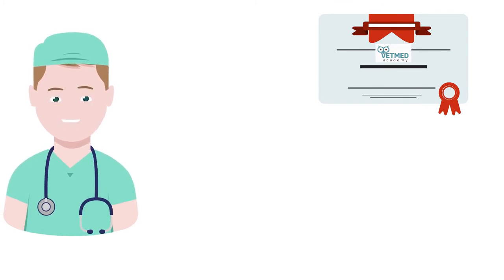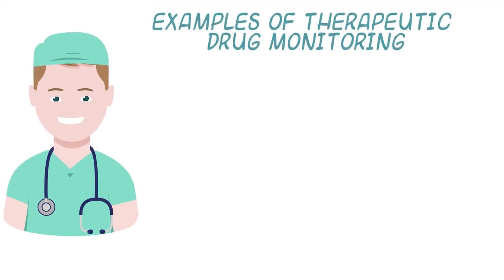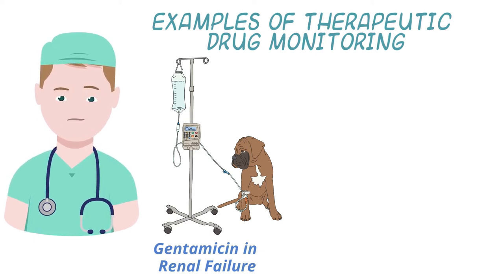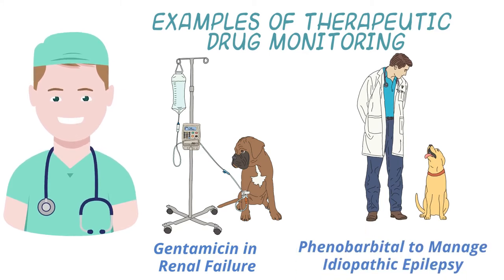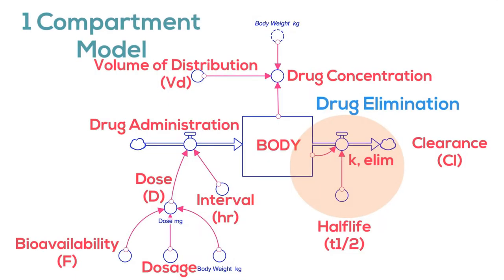Now, as a follow-up to our discussion of the principles of therapeutic drug monitoring, we'd like to show you a couple of examples of TDM in action. The first is to adjust the dosage of the aminoglycoside antibiotic gentamicin during renal failure, and the second to adjust the dosage of the anti-epileptic drug phenobarbital during management of idiopathic epilepsy. Let's take a look at multiple intramuscular dosages of gentamicin at a standard dosage of 5 mg per kg every 24 hours given to a dog.